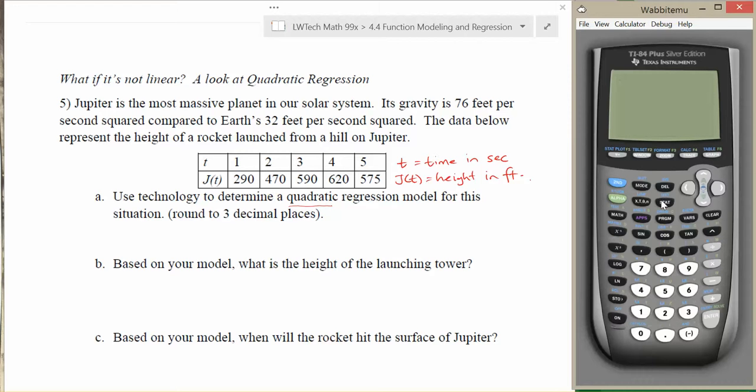The first thing you need to do if you want technology to find any type of equation of best fit, in this case a quadratic equation, is tell the data values to the calculator. We start by hitting the stat button, we're going to choose the edit option, and then we want to clear out any data that we already have in the memory. To clear out the data, go up, highlight the list name, hit clear, and then hit enter. Once you've done that we're ready to go ahead and type in our values. For T our values are 1, 2, 3, 4, 5.